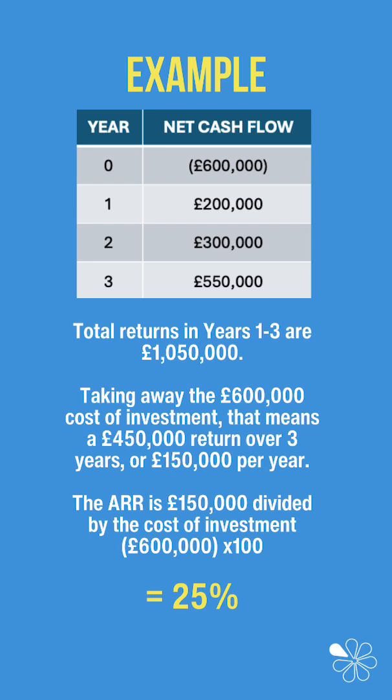That leaves us with £450,000 return over three years, or £150,000 per year. To calculate ARR, we simply divide the average return, £150,000, by the cost of investment, £600,000, and express it as a percentage — in other words, 25%.